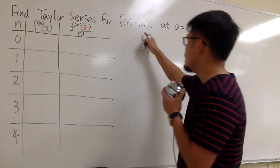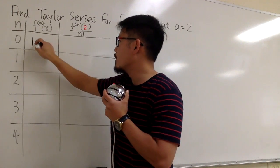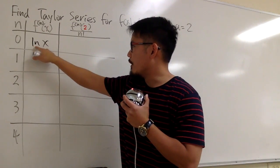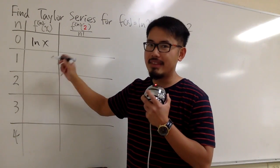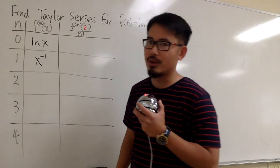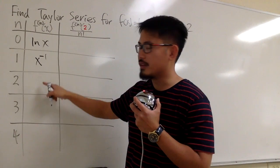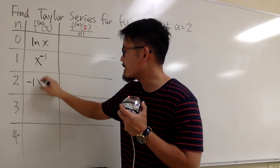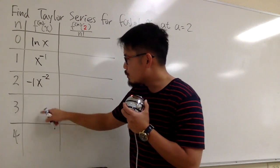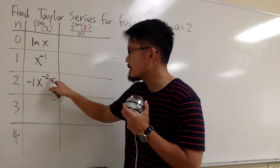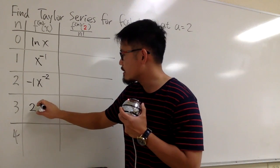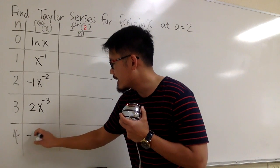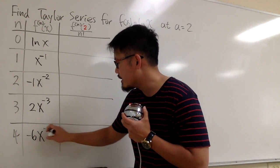For the 0th derivative of the function, it is just the original, so we'll put down ln(x) right here. We just have to differentiate this four times. The derivative of ln(x) is 1 over x, and let me write that as x to the negative 1 power because this is easier to get to the next derivative. For the next derivative, we bring the power to the front: negative 1, then minus 1, so we have x to the negative 2. Next, we bring the power to the front: negative 1 times negative 2 gives positive 2, then minus 1, so x to the negative 3. And then one more time: 2 times negative 3 gives negative 6, then minus 1 to the power, so x to the negative 4.